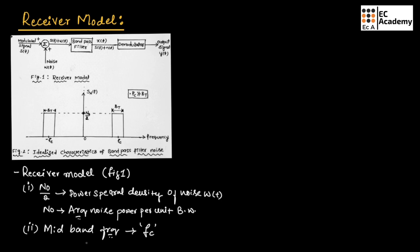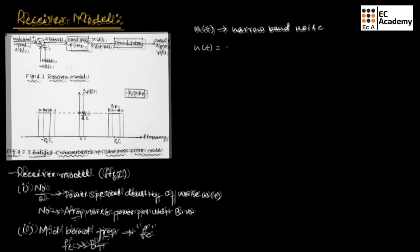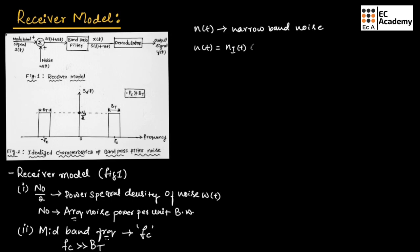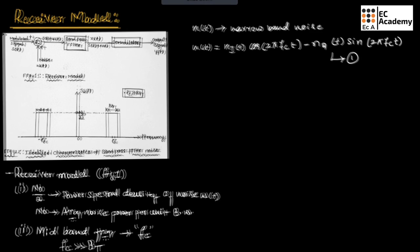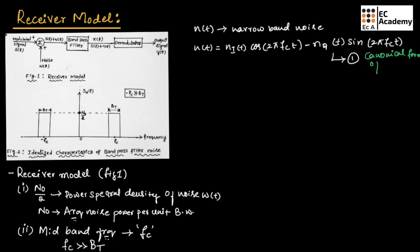The typical carrier frequency Fc will be very much greater than the transmitted bandwidth Bt, as shown in figure 2. In figure 1, the output of the band pass filter is S(t) plus n(t), where n(t) is the narrow band noise — so W(t) is the wideband noise and n(t) is the narrow band noise. We can write n(t) in canonical form as: n(t) = n_i(t)·cos(2πFct) − n_q(t)·sin(2πFct).